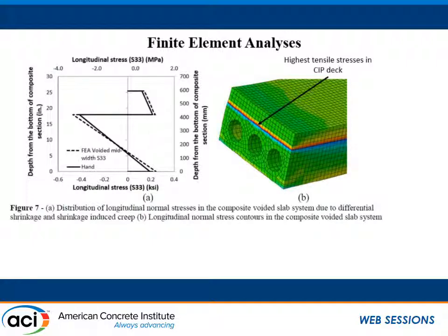The method described so far is a sectional analysis method, which can be done one section at a time. However, for composite systems that may not be prismatic — for example, the voided slab system is prismatic in the longitudinal direction but not in the transverse direction — we want to understand the stresses in a three-dimensional stress state and how adjacent sections affect one another. To answer that question, a finite element model was created, and the effects of differential shrinkage in the cast-in-place topping were simulated by subjecting that topping to a uniform decrease in temperature. In the longitudinal direction, where the system is prismatic, the results from the hand calculation method are very similar to those obtained from the finite element model. So the age-adjusted effective modulus hand calculation method does a reasonably good job of estimating the time-dependent stresses due to shrinkage and creep.